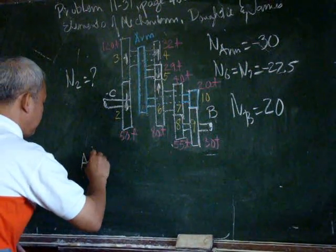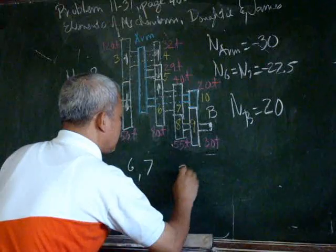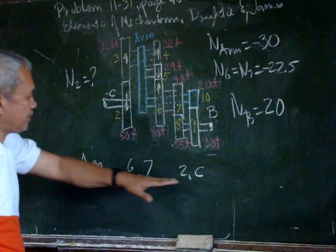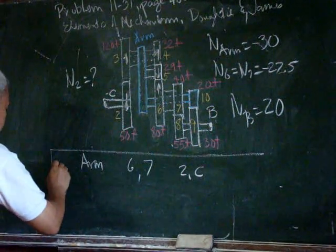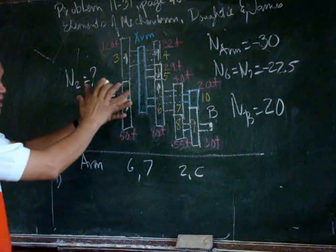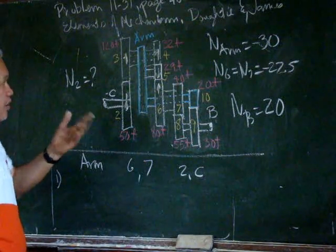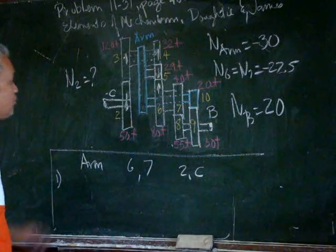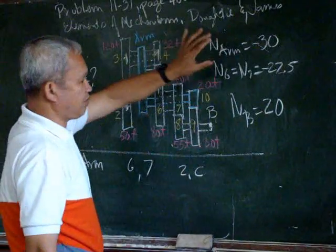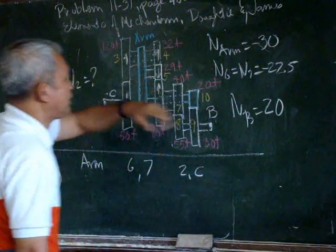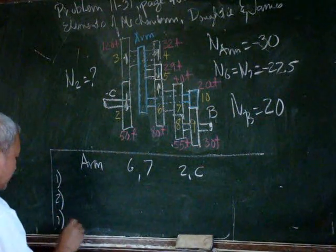We need to set up a table with columns for the arm, for gears 6 and 7, and for gears 2 and 6. The first step is to lock the epicycle train together and give it a particular rotation. That rotation is determined by the requirement for the final rotation of the arm, which is negative 30.